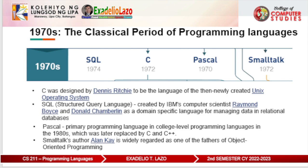The 1970s: the classical period of programming languages. I refer to the 1970s as the classical period because multiple languages created in this decade truly stood the test of time. The most notable examples are C and SQL. C was designed by Dennis Ritchie to be the language of the then-newly-created Unix operating system. Both C and Unix were to become incredibly important creations in computer science. C is still widely used in development of operating system kernels and embedded systems — its simplistic design gives programmers ultimate control over the hardware. Both Windows NT kernel, Mac Darwin kernel, and Linux kernel use C as their principal programming language.